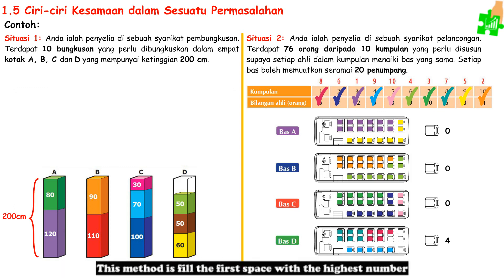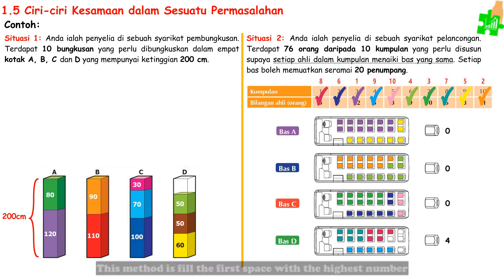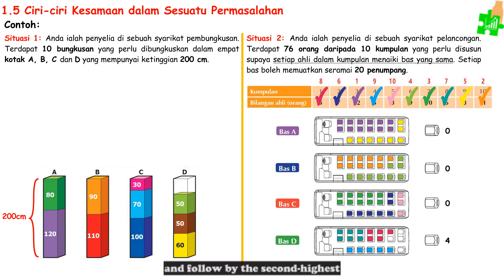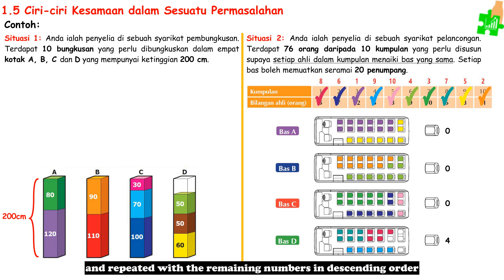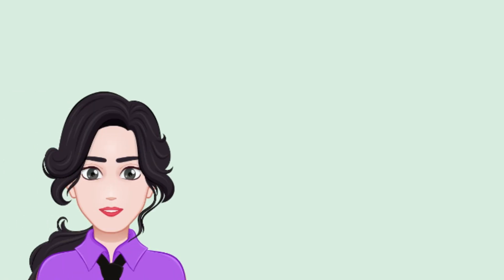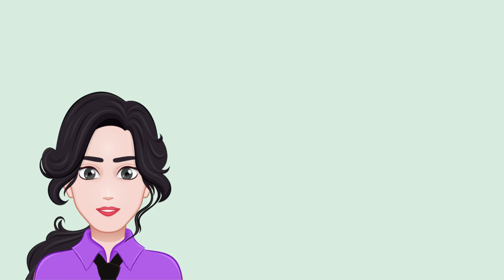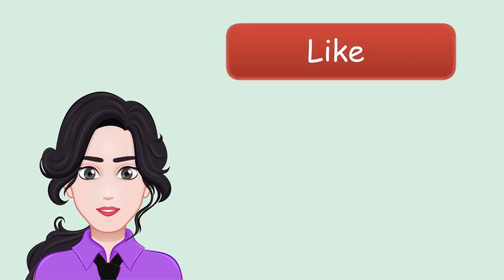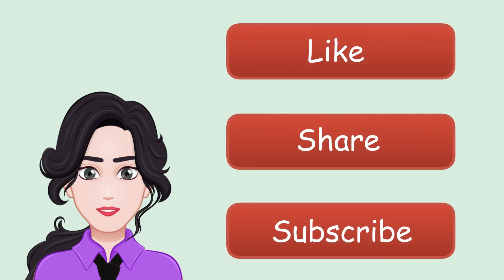This method is: fill the first space with the highest number, followed by the second highest, and repeat with the remaining numbers in descending order until all are filled. If you find this video helpful, don't forget to like, share, and subscribe to my channel. If you have any questions, comment below. Thanks for watching!